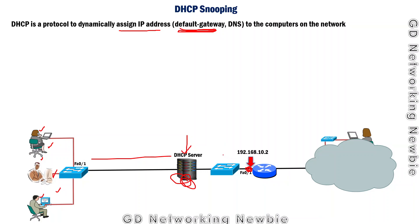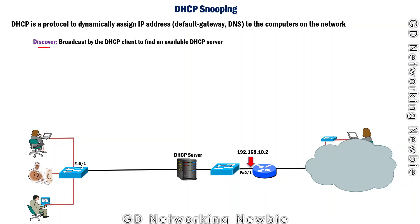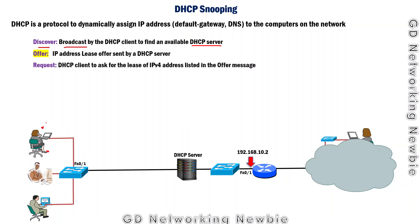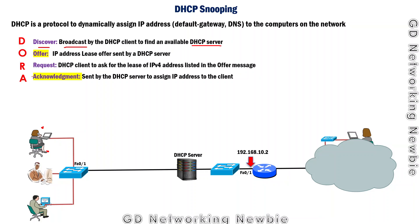In the DHCP protocol, this all happens using four messages. The first message is the Discover message, which is broadcast by the client to find any DHCP server in the network. Then the DHCP server sends an Offer message, offering an IP address to the client. The client then sends a Request message for the lease of an IP address, and finally the DHCP server sends an Acknowledgement message that assigns the IP address to the client. These four messages are sometimes called the DORA process, discussed in a previous video.